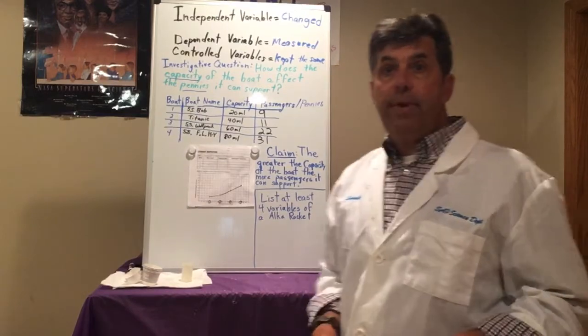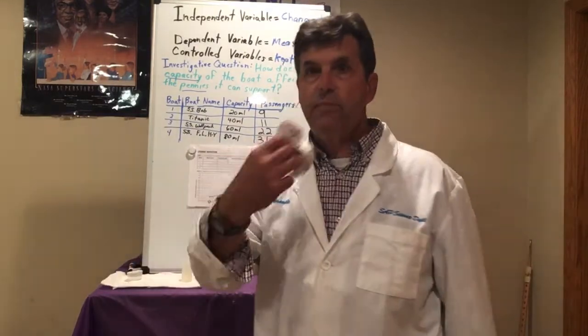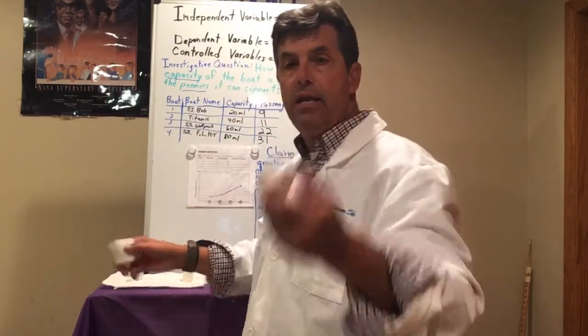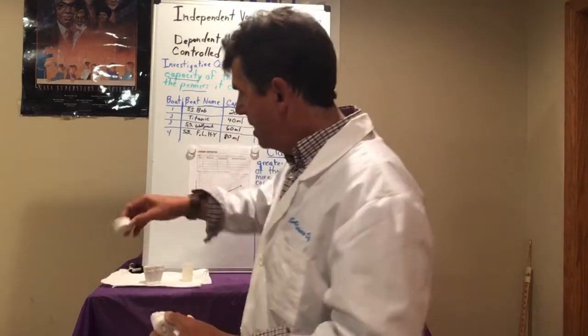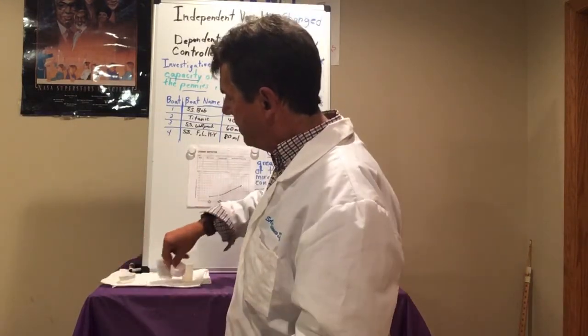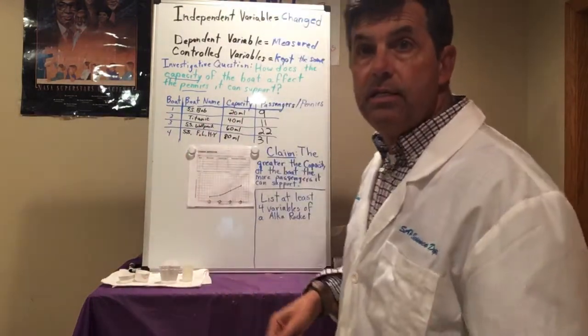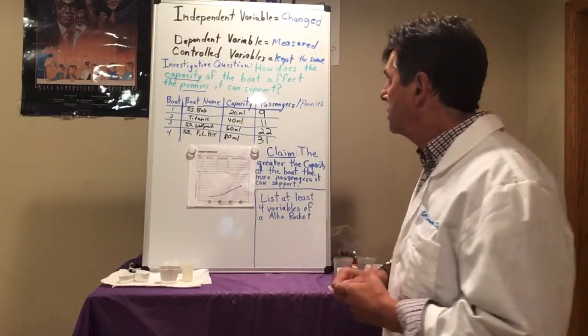You'll recall our independent variable was the capacity or the size of the boat. We had four sizes: 20 milliliters, 40, 60, and 80. We had those four different size boats, and we were checking to see how many passengers — pennies is what we used as passengers — how many they would hold.